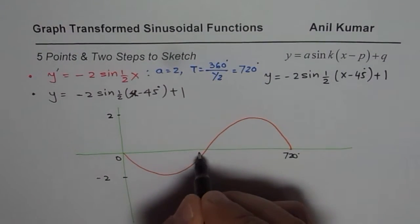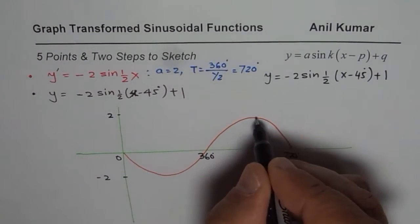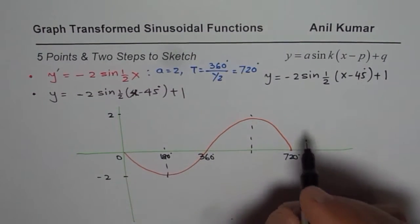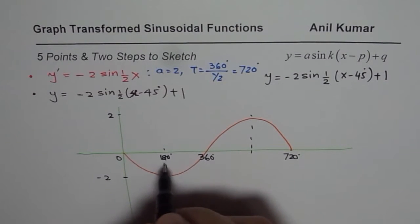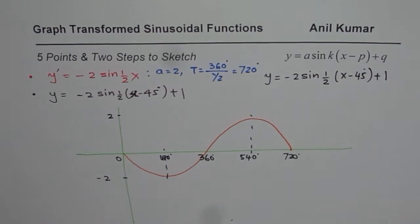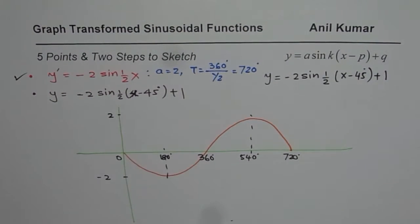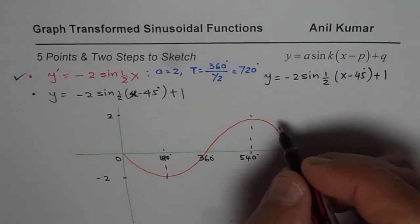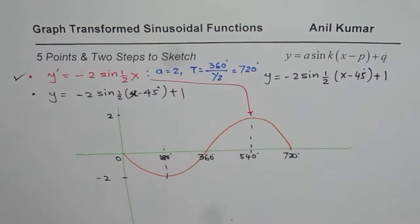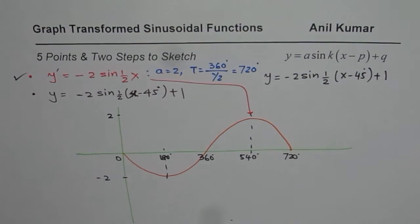Let me label them. So this is 360 degrees. Half of 360 is 180. So this is 180 degrees. And then we have 360 plus 180, which is 540 degrees. So this graph is the first part for us. That is to say, we have already sketched -2 sin of half x.